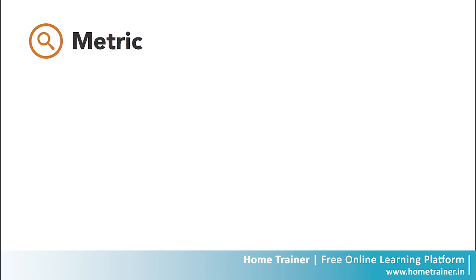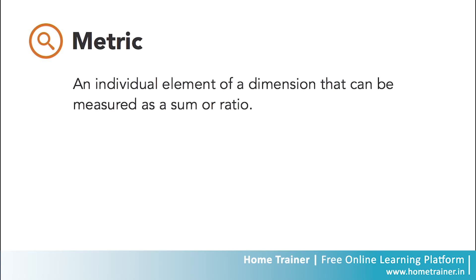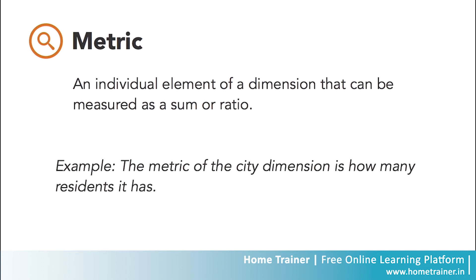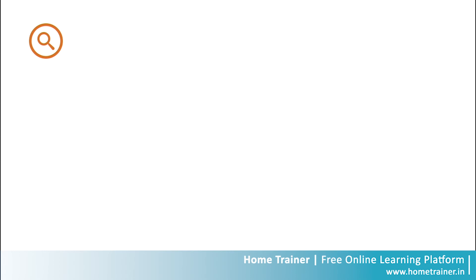As you look deeper at your data, you'll interact with what's known as a metric. This is a quantitative measurement of your data. Metrics in Google Analytics can either be sums or ratios. For example, the metric for the city dimension would be how many residents it has. Screen views, pages per session, and average session duration are other examples of metrics you'll find in Google Analytics.